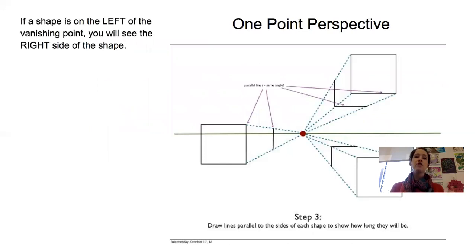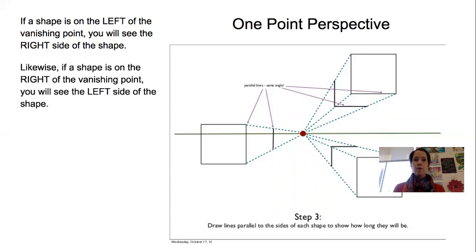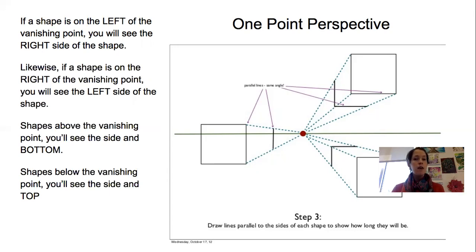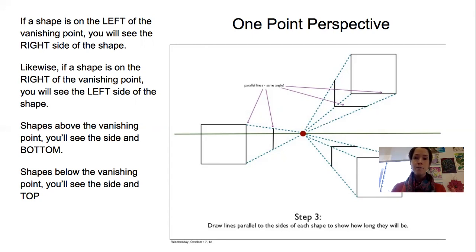With one point perspective, if a shape is on the left of the vanishing point, you will see the right side of the shape. Likewise, if a shape is on the right of the vanishing point, you will see the left side. Where the shape is in relation to the vanishing point determines what sides you see, and also determines the top and bottom. If your shape is above the vanishing point, it's like you're looking up at it — you'll see the bottom and whichever side is dictated by the vanishing point. If the shape is below the vanishing point, you see the sides and the top.